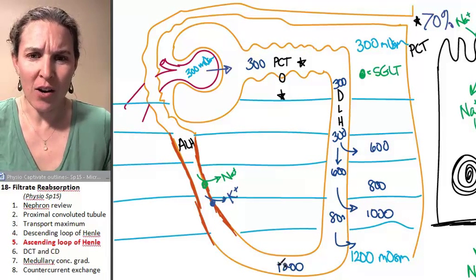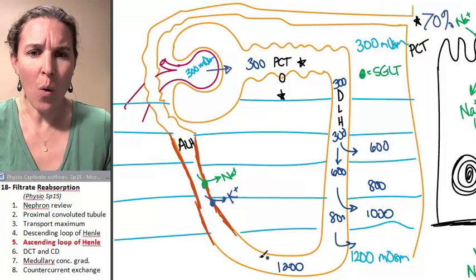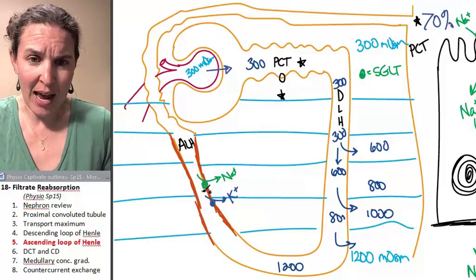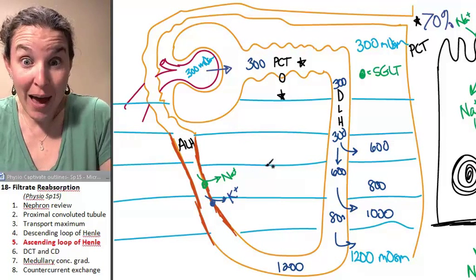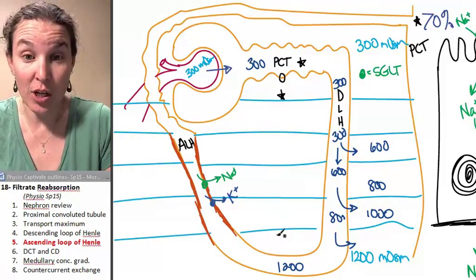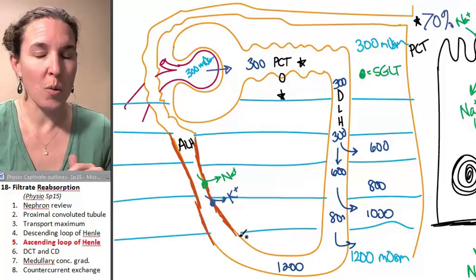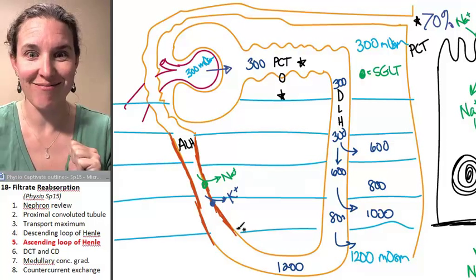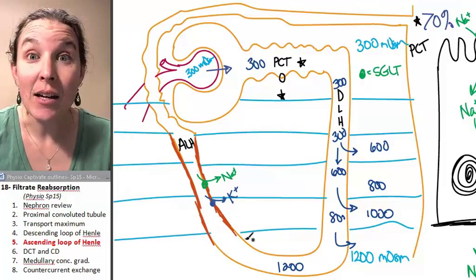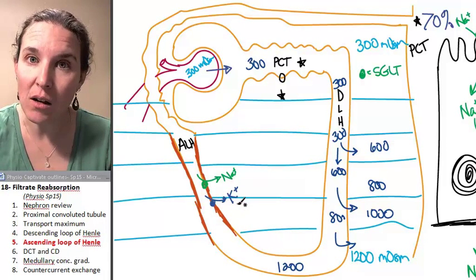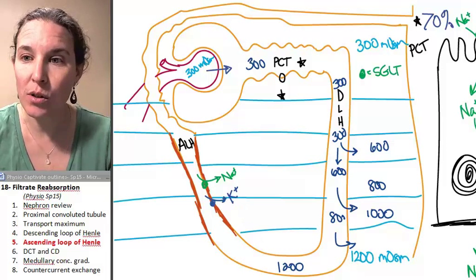Water is going to want - look how concentrated this stuff is. Water would want to come in as the filtrate is moving up back through this concentration gradient, but we're waterproof. We can't let water back in, and we're pumping solutes out. Look what happens.